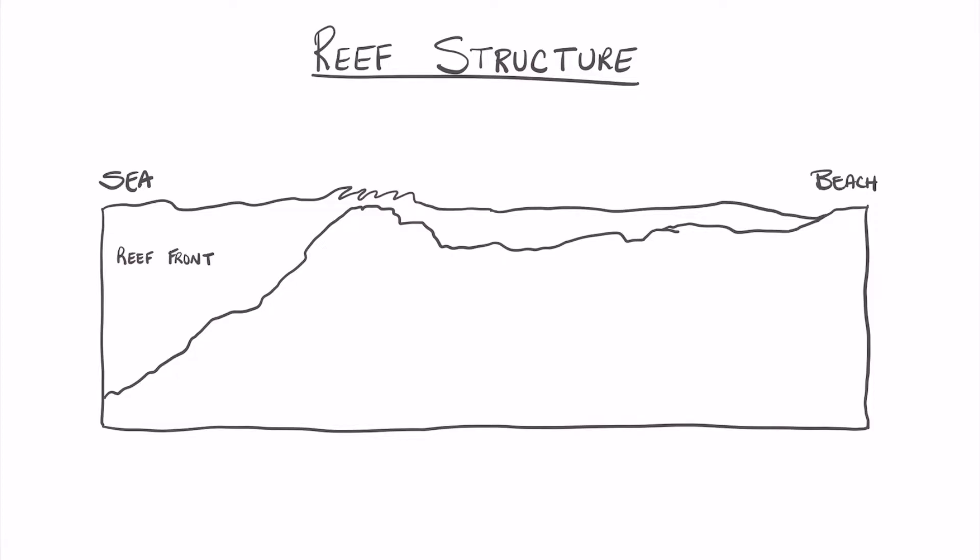The slope of the reef front can be either steep or it can be gentle. This is a low stress area which means there's not a lot of wave action and it's relatively calm. Corals like the brain coral and the pillar coral usually settle in this area.